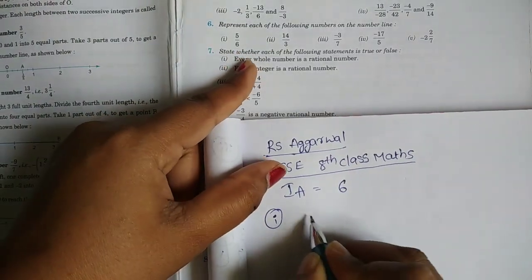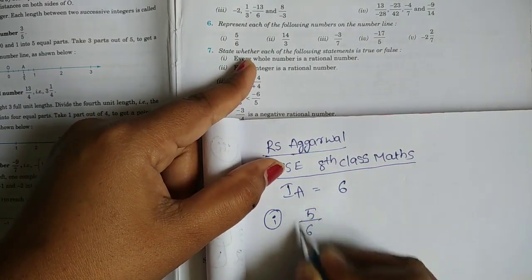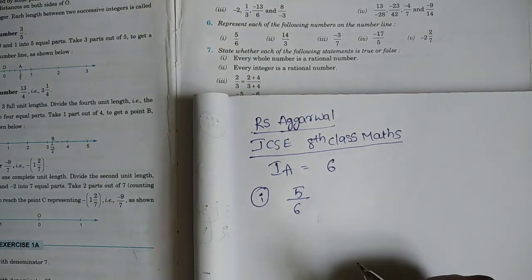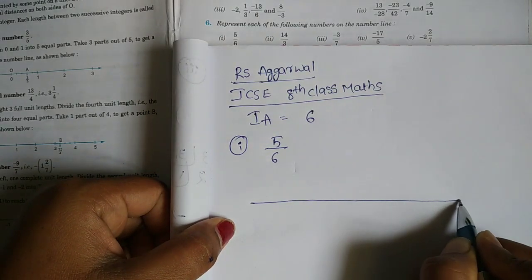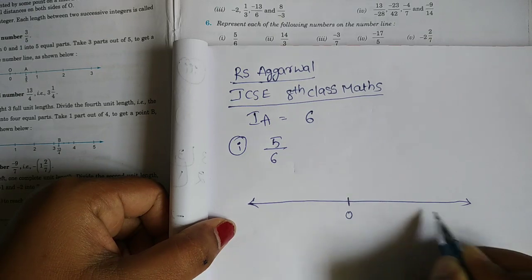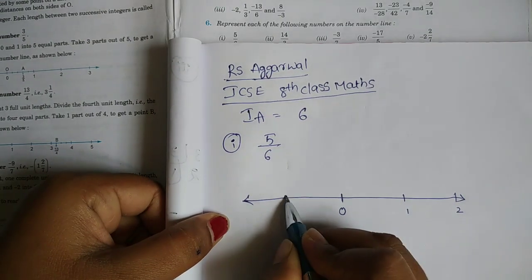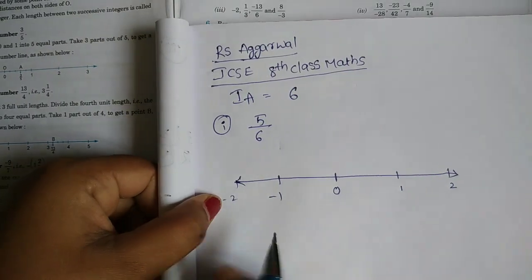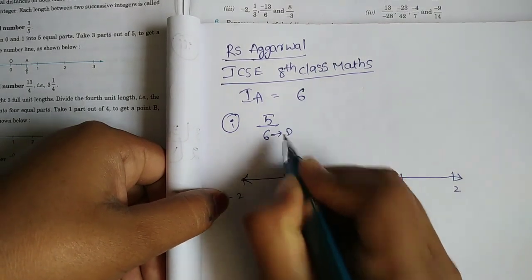The first question is 5 by 6. We need to represent 5 by 6 on the number line. The denominator is 6.